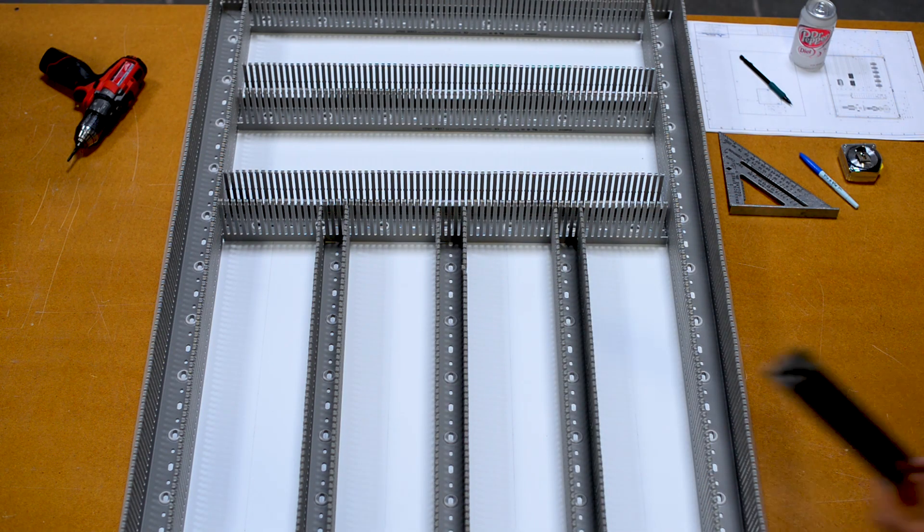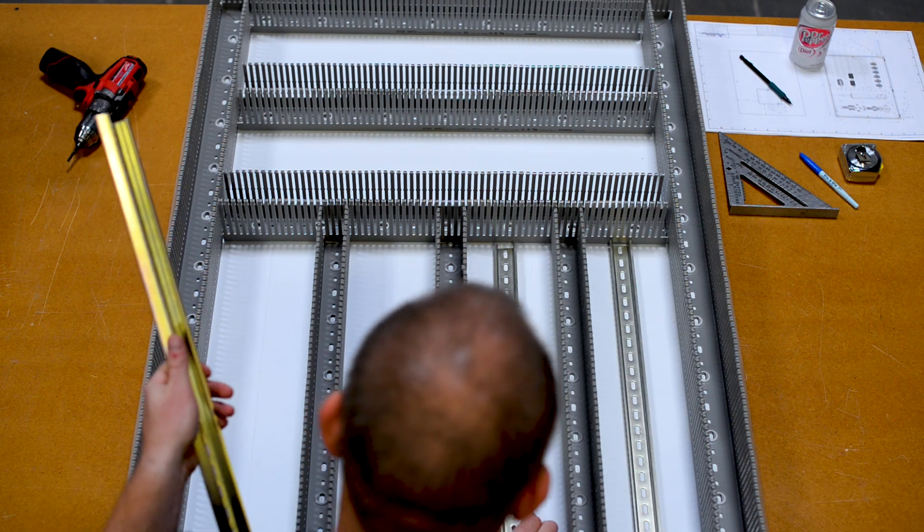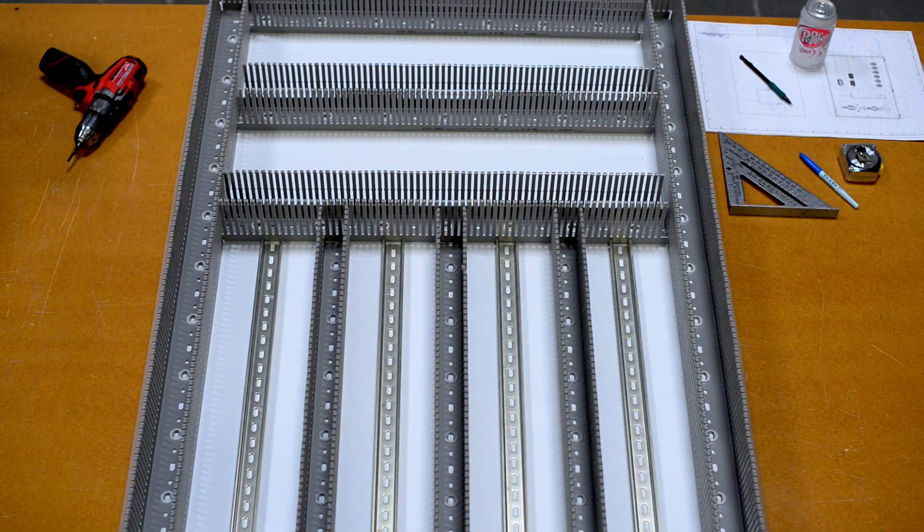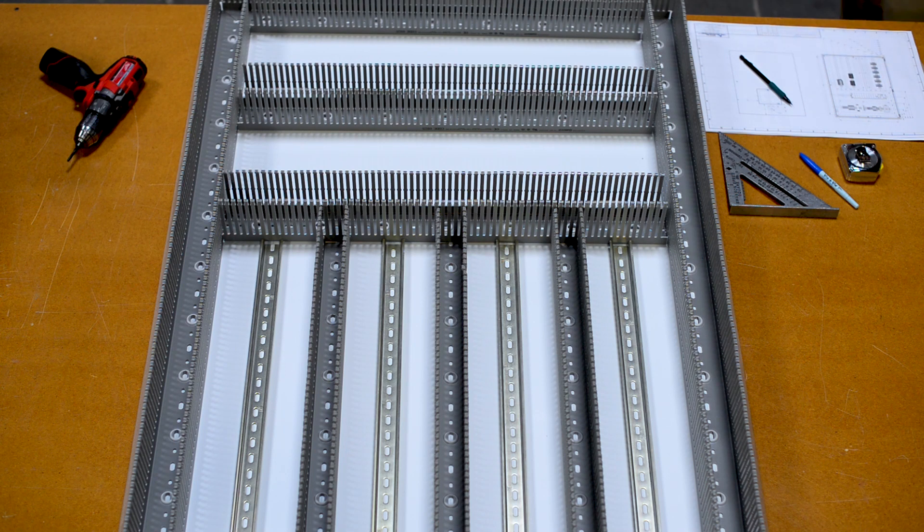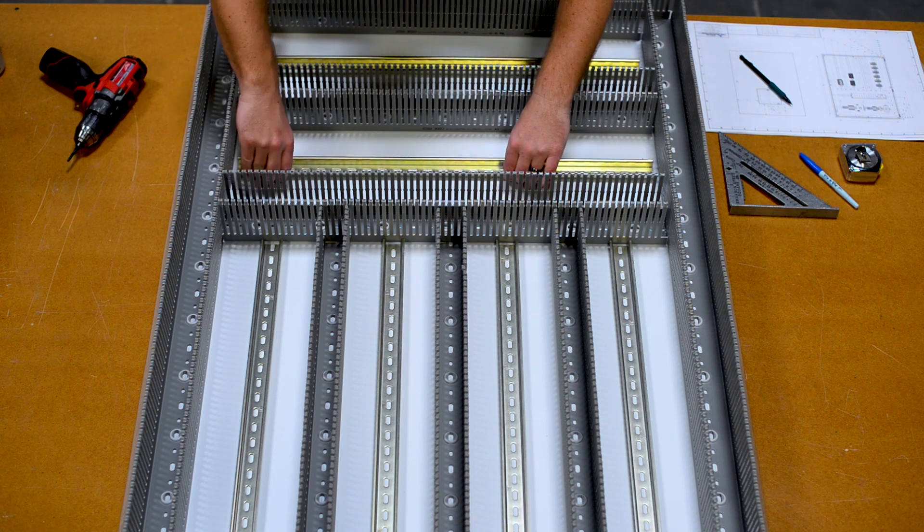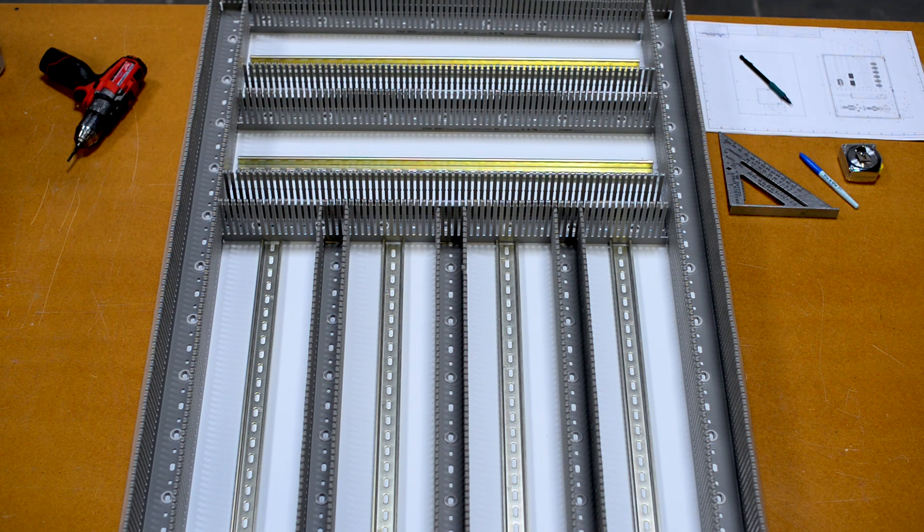This step has personally saved me so many headaches and much time, so I highly recommend you take the time to layout your parts. To begin, I place all the wire ducting and DIN rail in the proper spots on the panel using the layout lines you have previously placed.